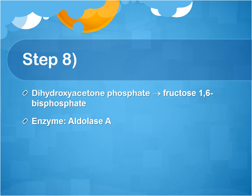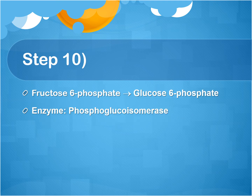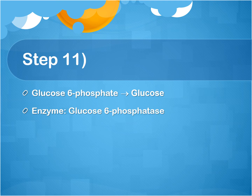Continuing through gluconeogenesis, we come to step 8: two dihydroxyacetone phosphates are joined together by aldolase A to create fructose 1,6-bisphosphate. In step 9, fructose 1,6-bisphosphate is dephosphorylated by fructose 1,6-bisphosphatase to generate fructose 6-phosphate and inorganic phosphate. Fructose 6-phosphate is then isomerized into glucose 6-phosphate by phosphoglucoisomerase. Finally, glucose 6-phosphate is dephosphorylated by glucose 6-phosphatase to create the end product of gluconeogenesis: glucose.